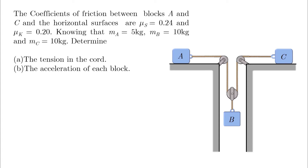The coefficients of friction between blocks A and C and the horizontal surfaces are μs = 0.24 and μk = 0.2. Knowing that MA equals 5 kilograms, MB and MC are both 10 kilograms, determine the tension in the chord and the acceleration of each block.